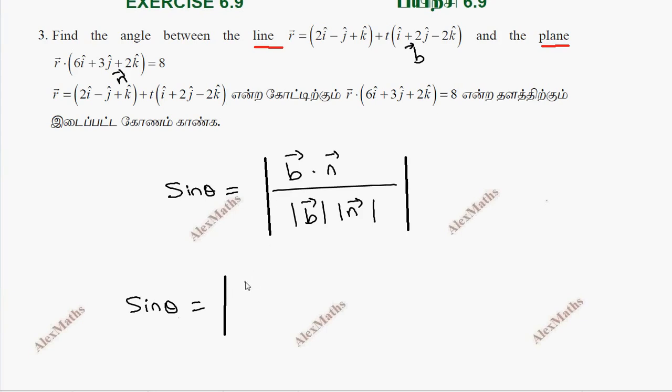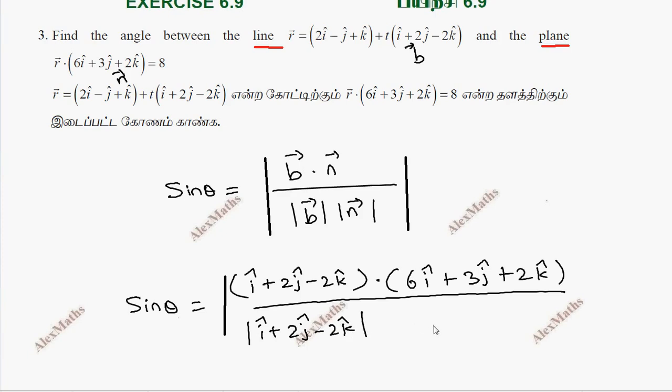We will find the b vector. B value on the i cap plus 2j cap minus 2k cap dot n vector on the 6i plus 3j plus 2k, whole divided by mod of b vector, so i plus 2j minus 2k, again mod of 6i plus 3j plus 2k.